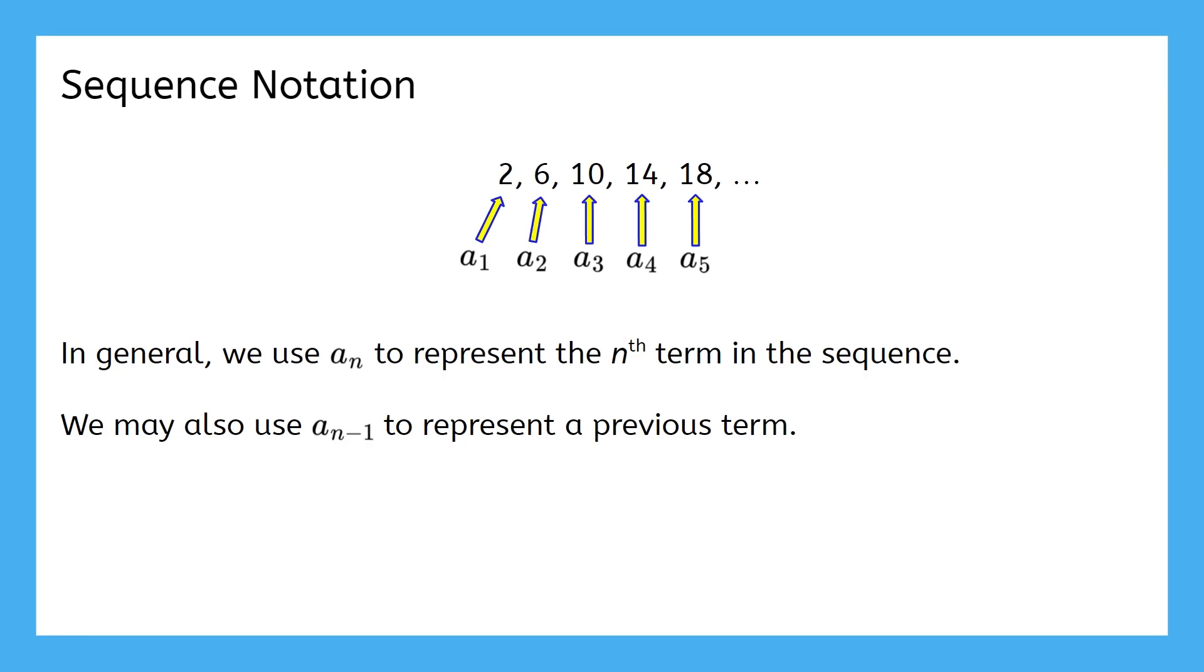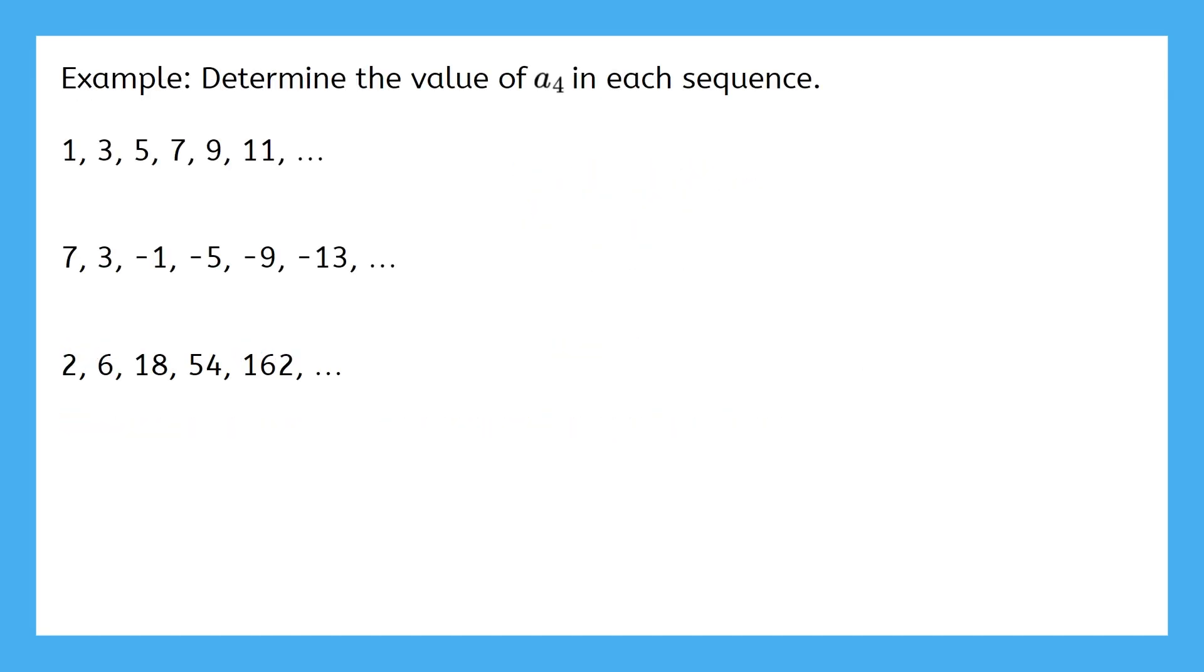Let's go back to the previous examples for a moment. Let's practice this kind of notation. Using our three sequences from earlier, determine the value of a4 in each sequence. Remember, a4 represents the fourth value in the sequence. So for the first sequence, the fourth term is 7. So a4 is equal to 7. Can you figure out the other two? Pause the video and give it a try. The second example has its fourth term as negative 5. And the final example has a4 equal to 54.